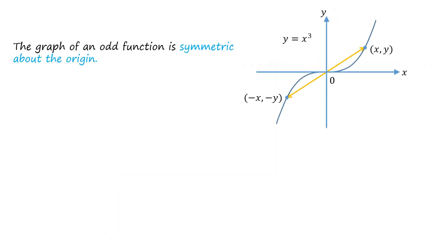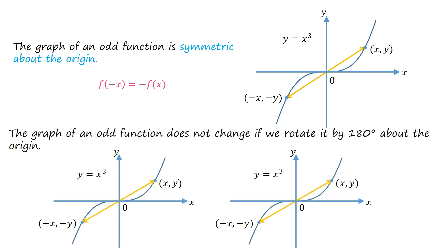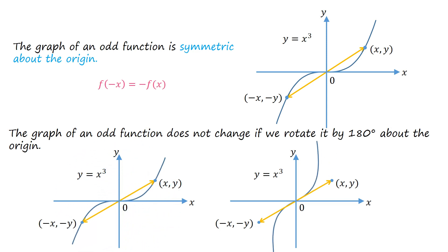The graph of an odd function is symmetric about the origin. This is because the value of y at negative x is the negative of the value of y at x. The graph of an odd function does not change if we rotate it by 180 degrees about the origin. Let's rotate the graph by 180 degrees clockwise. Now let's rotate the graph by 180 degrees anticlockwise. Clearly, the graph remains unchanged in both cases.